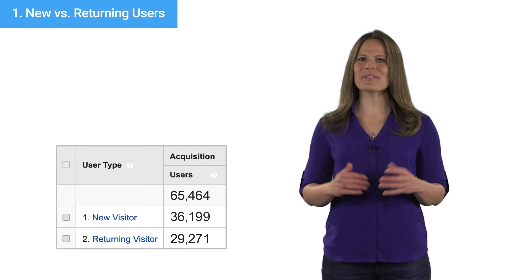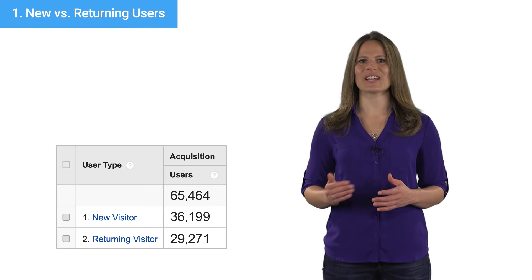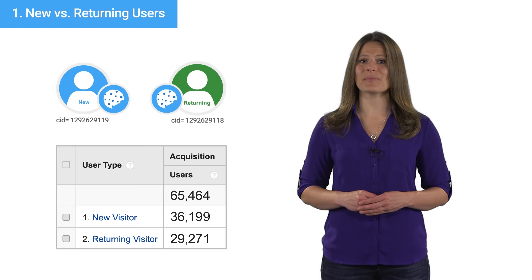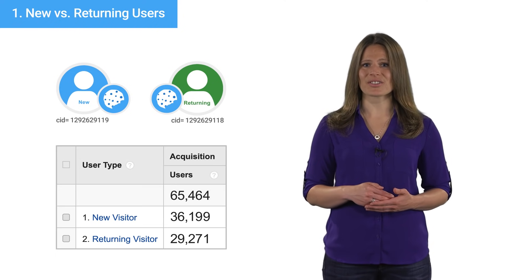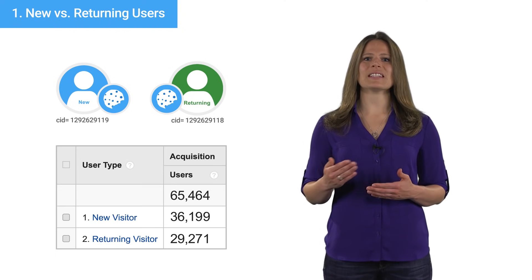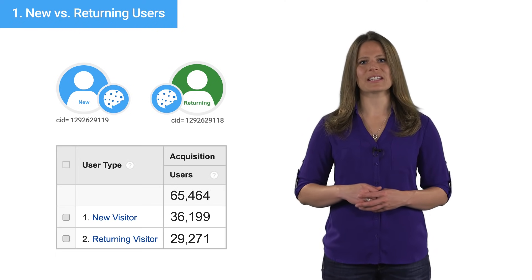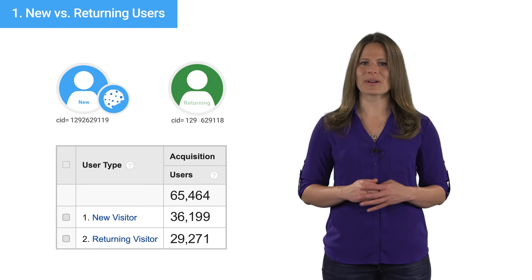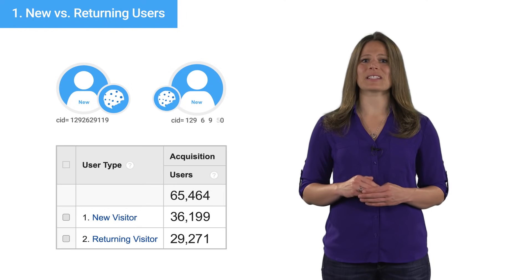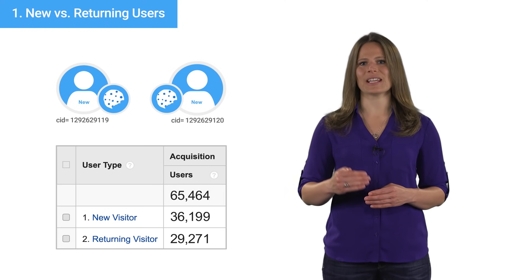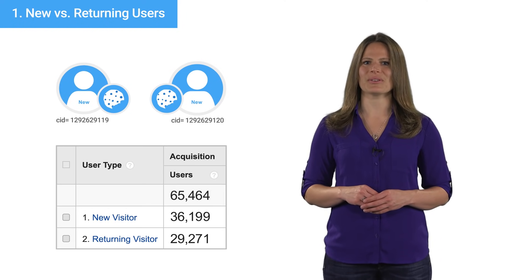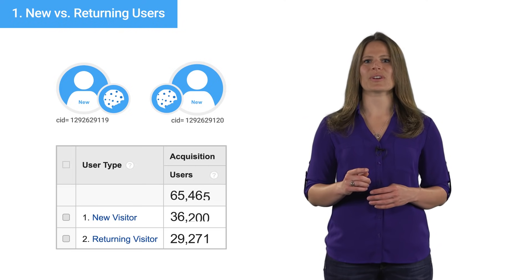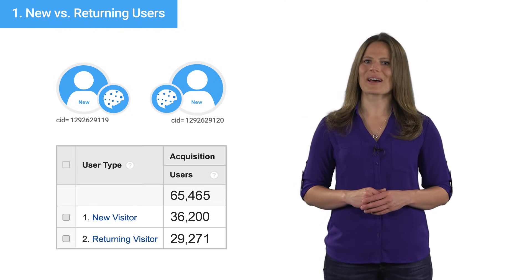There are a couple limitations to note about differentiating users. Since Analytics uses a browser cookie to determine unique users over a given session, this information will be lost if a user clears or has blocked that cookie in their web browser. If a user clears their browser cookies, Google Analytics will set a new unique ID the next time a browser loads a tracked web page.